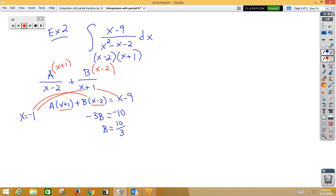Choose a convenient x value for the second piece. This time, x is 2. I'm going to plug in my 2 in for my x's. That would give me 3A is equal to 2 minus 9 is negative 7, A is negative 7 thirds.